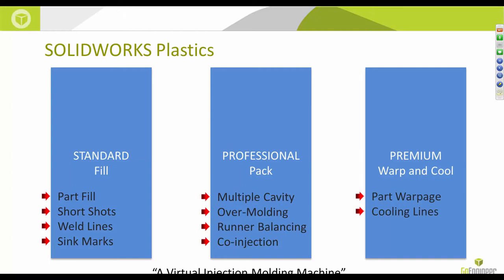The premium tier shows what the plastic looks like when ejected from the mold — the various shrinkages and warpage — and allows you to analyze the mold from a temperature distribution level. In the first two stages we assume uniform temperature distribution, but with the premium level you can simulate cooling lines, specify coolant types, mold material properties, and coolant flow rates to study how non-uniform temperature distribution influences part warpage.